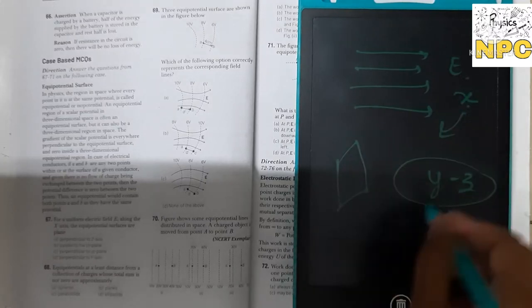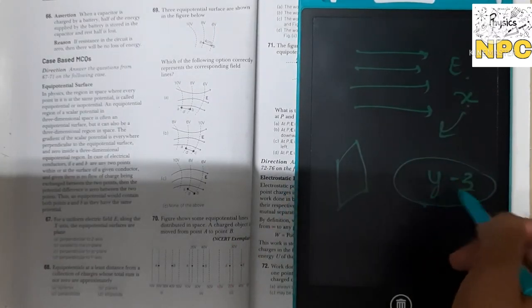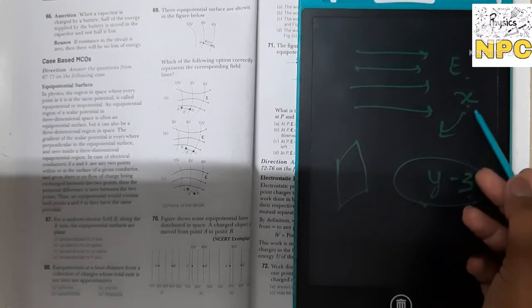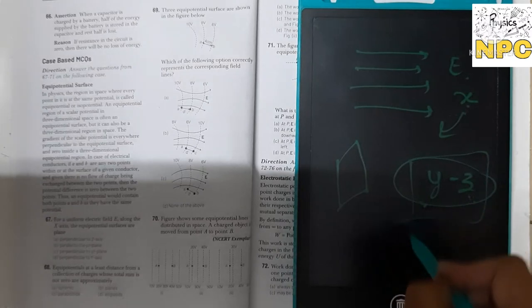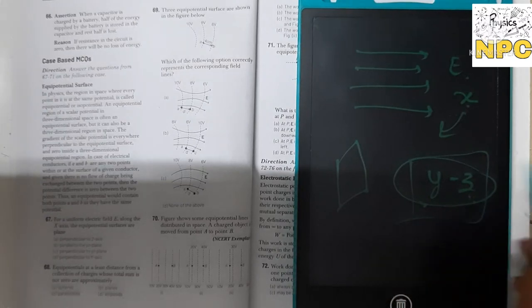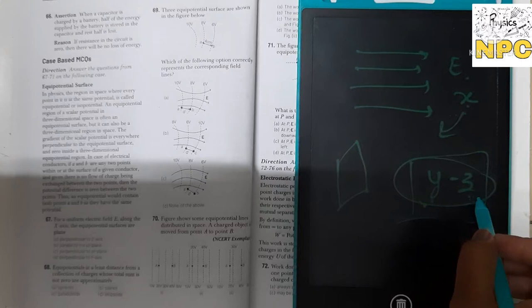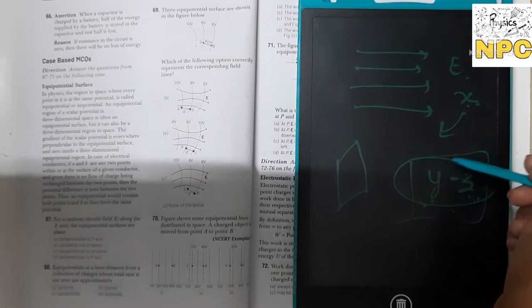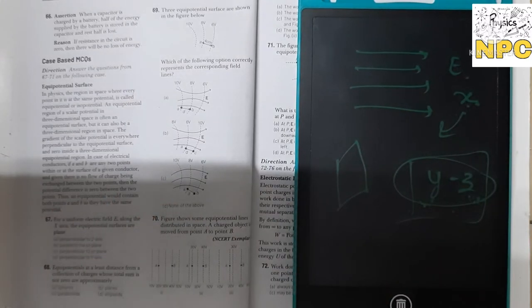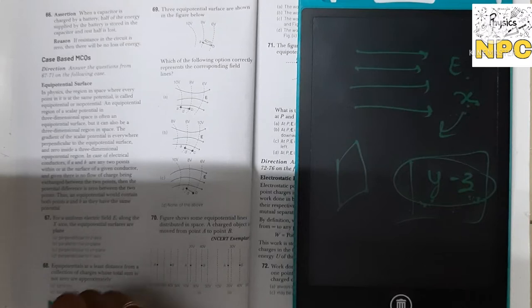The X-axis is perpendicular to the Y and Z axes. The equipotential surface must be perpendicular to the electric field direction, which is along X. Therefore the equipotential planes lie in the Y-Z plane, parallel to the Y and Z axes. So answer B is correct.